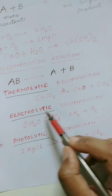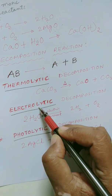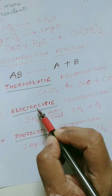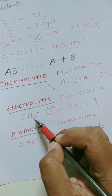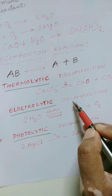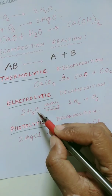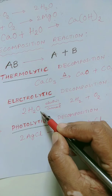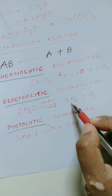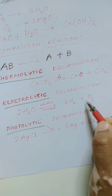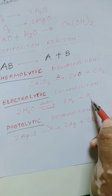If it is electrolytic decomposition — can you guess, children? The lysis or the breakdown is happening because of electric current. So, when electricity is passed and the compound is breaking down, it is called electrolytic decomposition. The best example is the electrolysis of water. When electricity is passed through water, it breaks down into its individual constituents, which are nothing but hydrogen and oxygen.